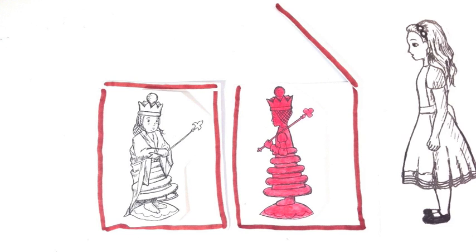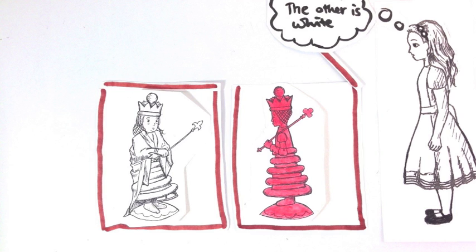Now if you open one of the boxes and see the object is red, then you know without having to check that the other box has the white object in it. So we say that these two objects are entangled, which means that knowing something about one causes you to know something about the other, without ever having to look.